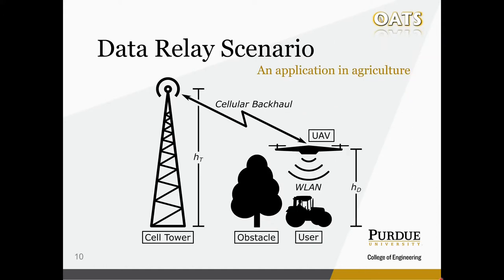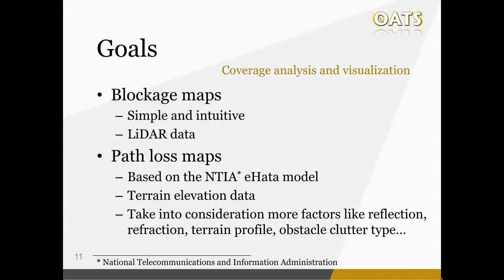The scenario we considered is demonstrated by this figure. For simplicity, all antennas are assumed to be omnidirectional. The key is that we assign a dedicated UAV to fly right above each user to provide better cellular coverage by avoiding obstacles. We chose this setting mainly for two considerations. First, this is already possible to implement today and will be beneficial to many rural agricultural scenarios. Second, given a fixed UAV height, this is close to the best one can achieve at the system level. After all, it is not yet practical to have one dedicated UAV for each user. What we wanted were two kinds of coverage maps: the blockage map and the path loss map.